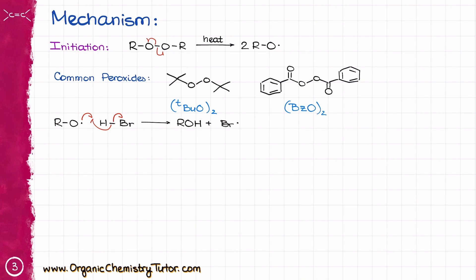Next, our newly formed peroxide is going to scavenge a hydrogen from an HBr molecule. This step gives us the Br radical,